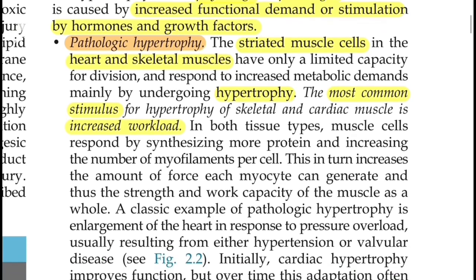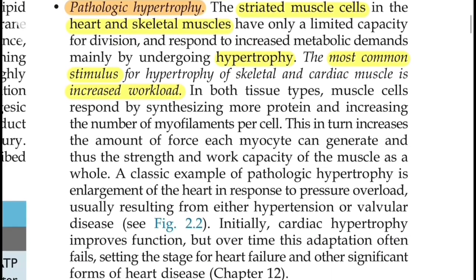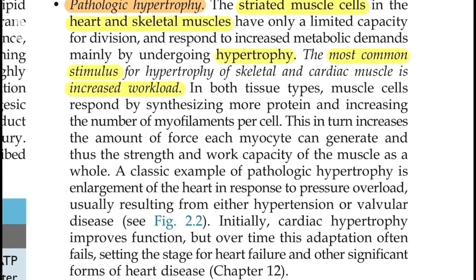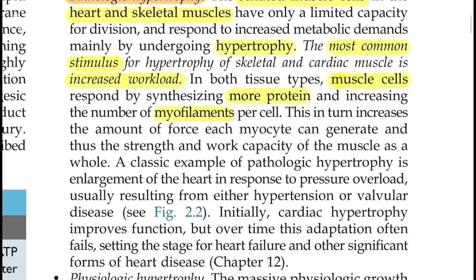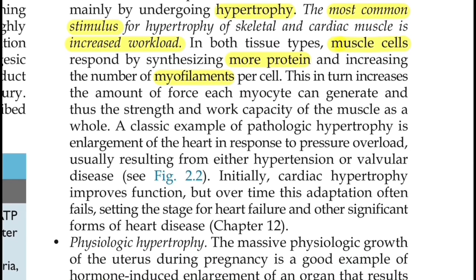In both tissue types, muscle cells respond by synthesizing more protein and increasing the number of myofilaments per cell. This increases the amount of force each myocyte can generate, and thus the strength and work capacity of the muscle as a whole. A classic example of pathological hypertrophy is enlargement of the heart in response to pressure overload, usually seen in hypertension or valvular heart diseases.